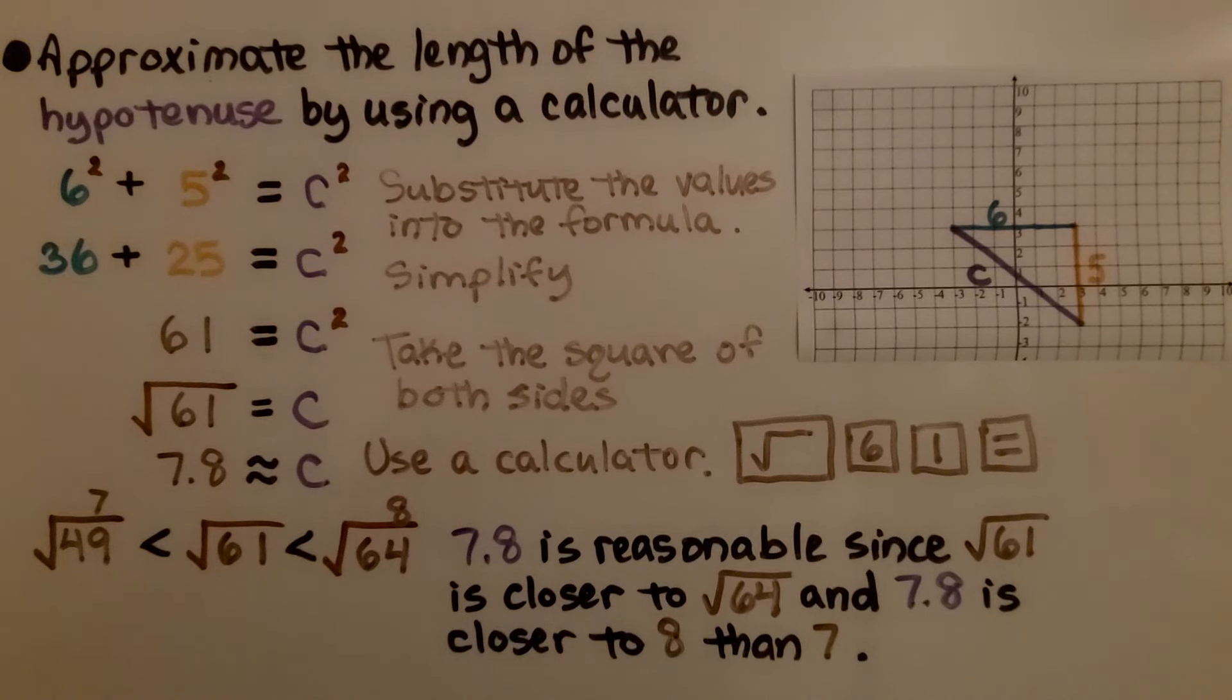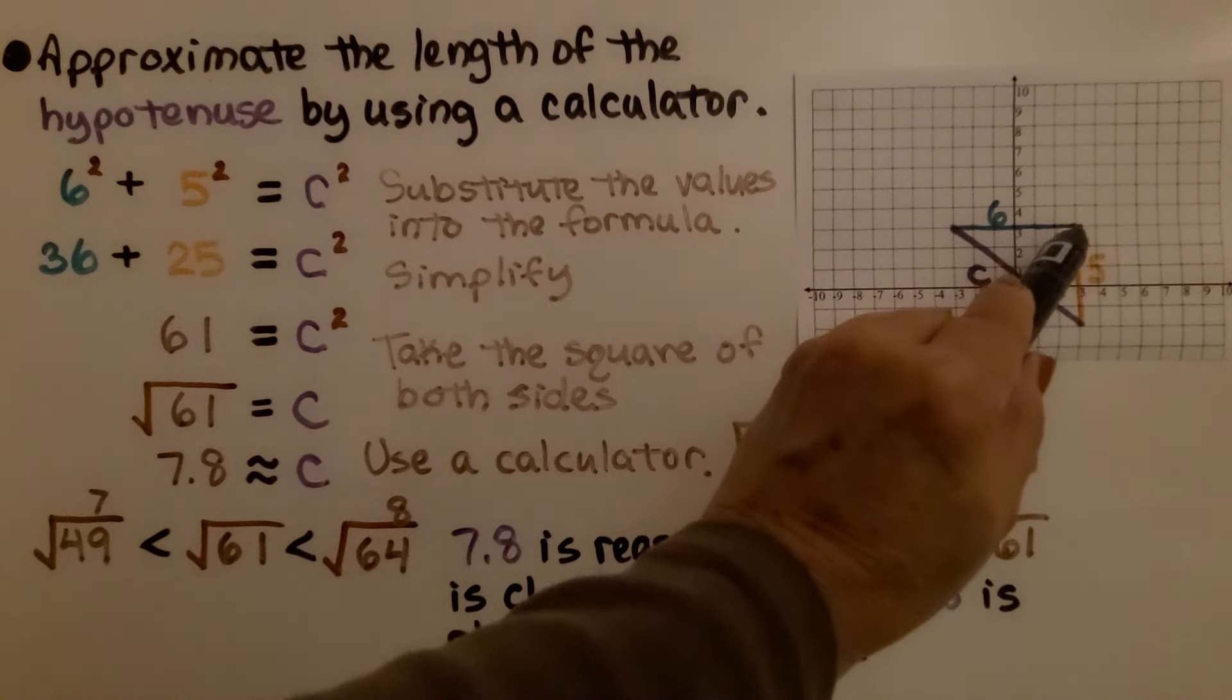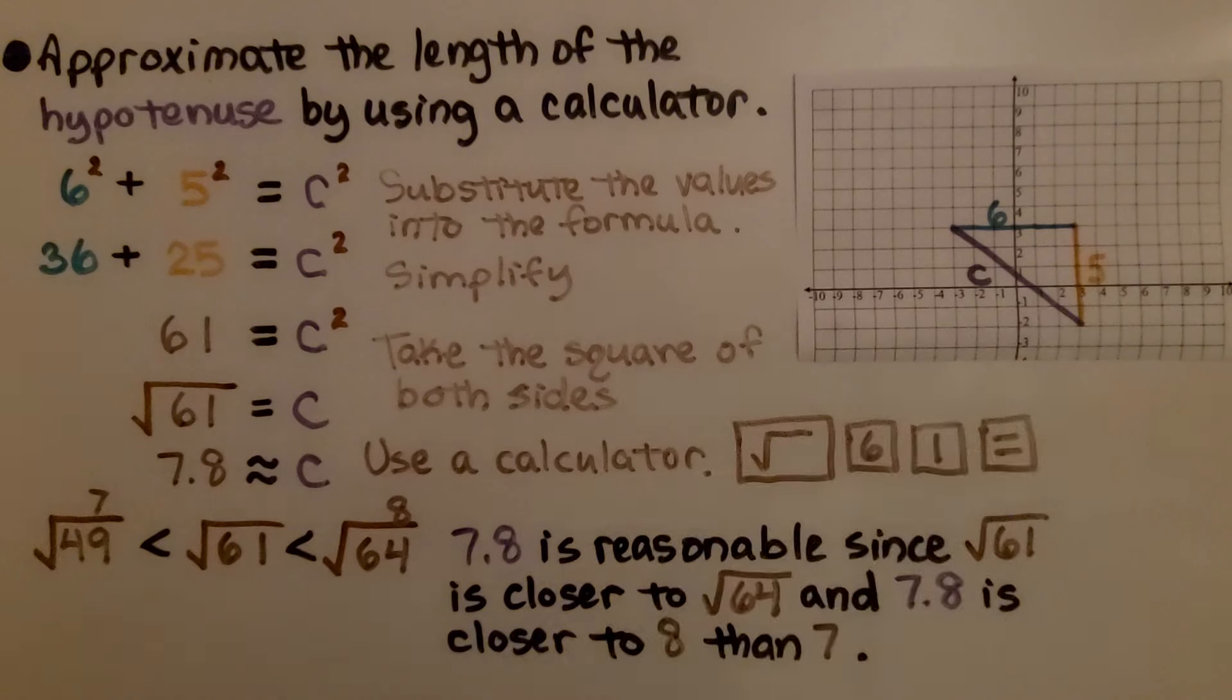Again, it's telling us to approximate the length of the hypotenuse by using a calculator. We count the units. We've got 6 units horizontally and 5 units vertically. We substitute the values into the formula and simplify it. We get 36 plus 25 is equal to c squared. 36 plus 25 is 61, which means we're looking for the square root of 61.